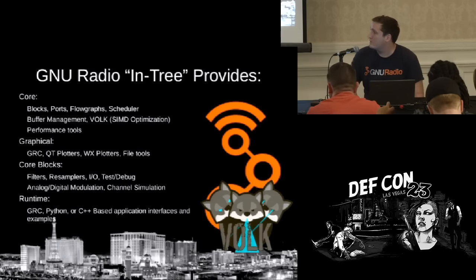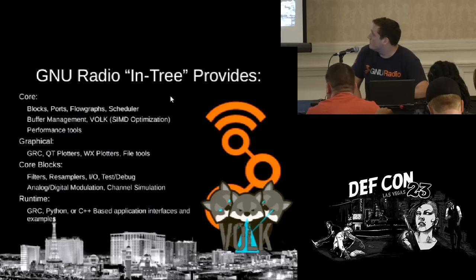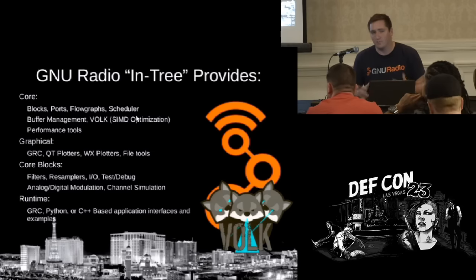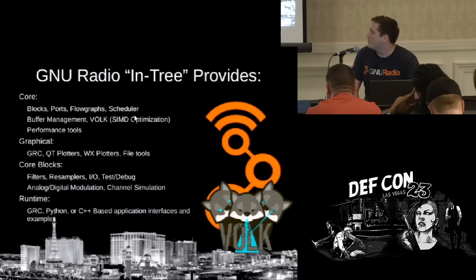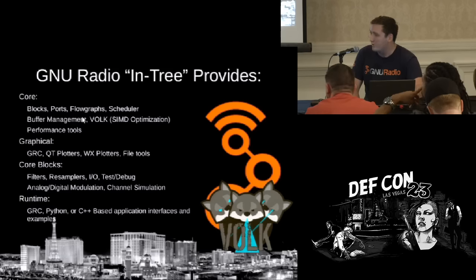What does GNU Radio provide? GNU Radio is two things: a core of modules to enable software radio, and an ecosystem of out-of-tree modules surrounding it maintained by others. The in-tree portion you get when you install GNU Radio gives you blocks with ports that form flow graphs, a scheduler that ties them together and allocates circular buffers between them to stream samples between algorithms. You also get VOLK, which provides SIMD kernels used inside many algorithms, and a number of performance monitoring tools.